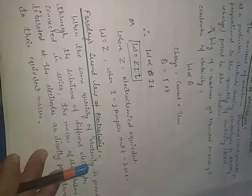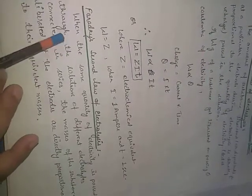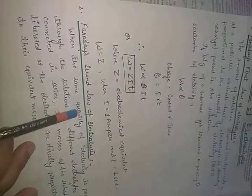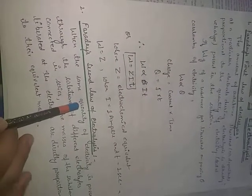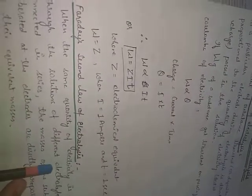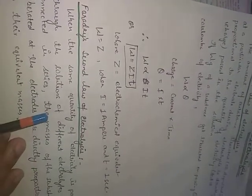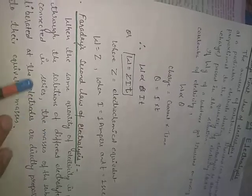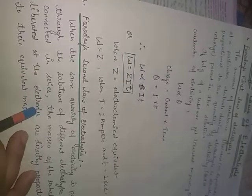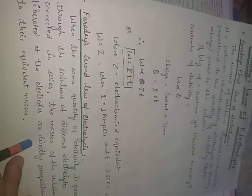The second law states that when the same quantity of electricity is passed through solutions of different electrolytes connected in series, the masses of substances liberated at the electrodes are directly proportional to their equivalent masses.